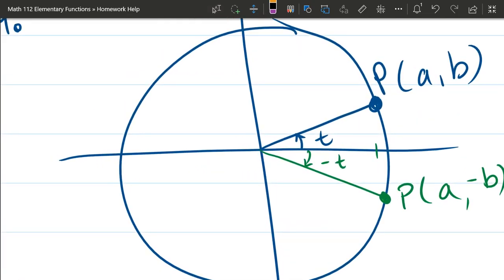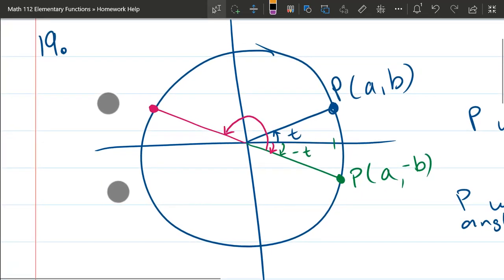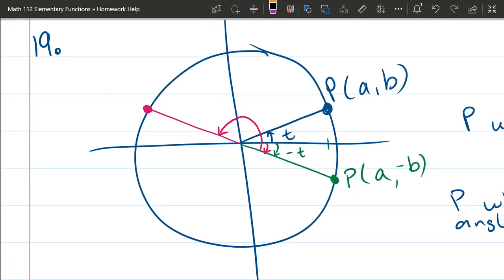So we start with our first angle, do negative t, and then rotate halfway around in the counterclockwise direction. And what we're left with is this angle over here in quadrant two. So again, we went negative t first and then half a rotation.